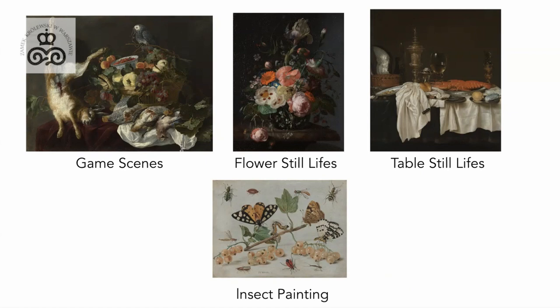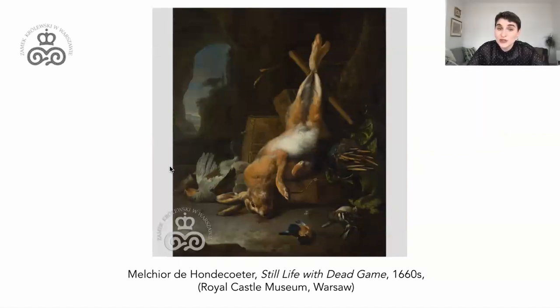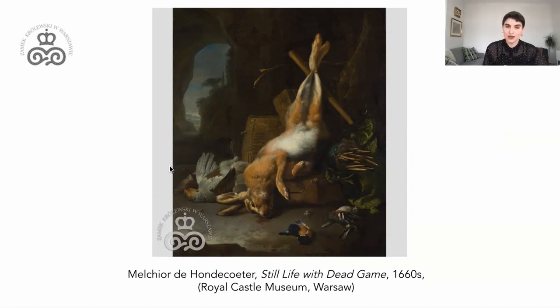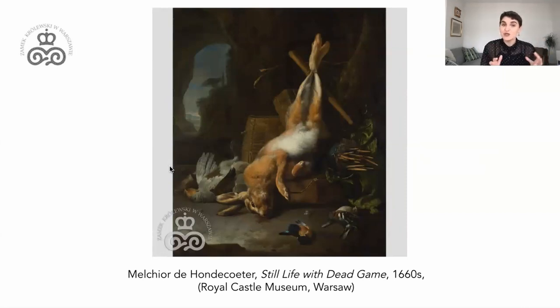Some of these subjects responded to popular pastimes and fashions: hunting, or in the case of flower still lives, the increased interest in botany and new flower species imported from the New World. But for many of these paintings there is also a deeper meaning. These images could act as memento mori — a term that literally translates as 'remember that you will die.' In cases like Hondecoeter's game scene the reference to mortality is obvious, while in scenes of fruits and flowers the viewer is meant to think about how these elements will all rot and decay with time. For a Dutch Calvinist audience, these paintings were a strong reminder that all life on earth is fleeting — a perfect way of combining an image of incredible beauty with a moralising lesson.